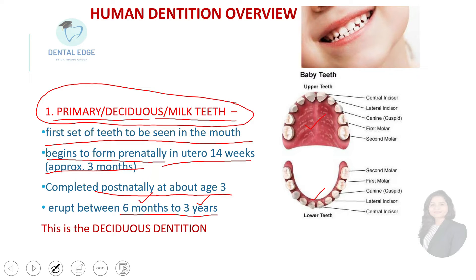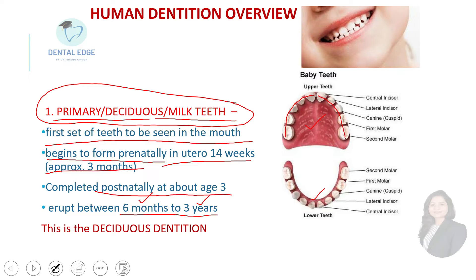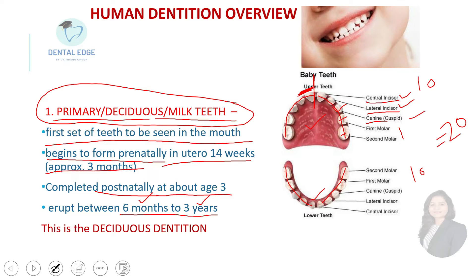The maxilla is the upper jaw and the mandible is the lower. The deciduous teeth are 5 on each side — so 10 in the upper arch and 10 in the lower arch — giving 20 deciduous teeth in total. These are: central incisor, lateral incisor, canine, first molar, and second molar on each side.